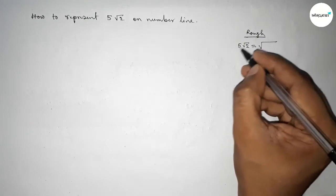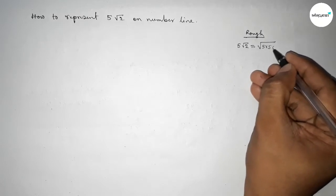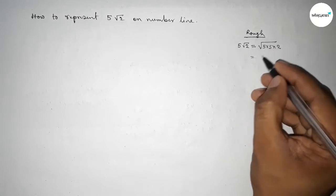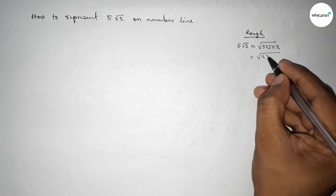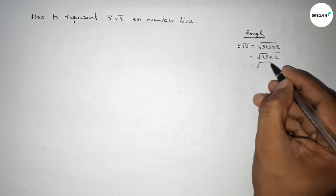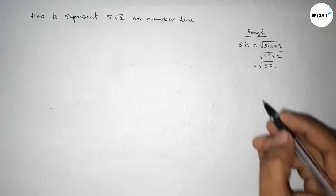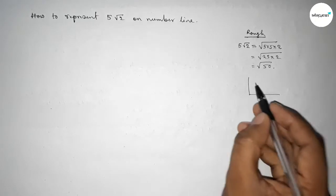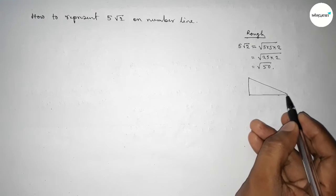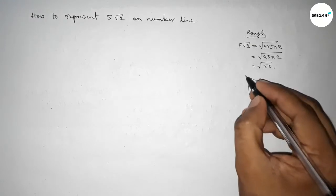5√2 equal to, we can write here 5 into 5 into 2, so this is 25 into 2, so this is √50. Now if there is a right angle triangle, so roughly drawing here a right angle triangle.